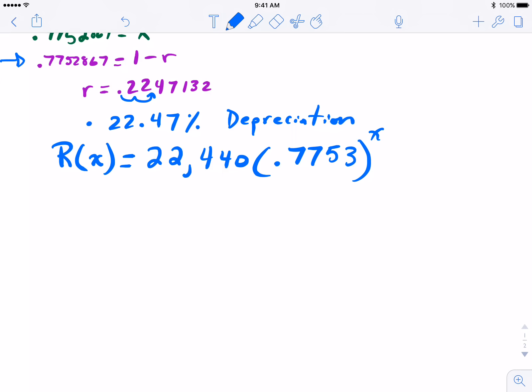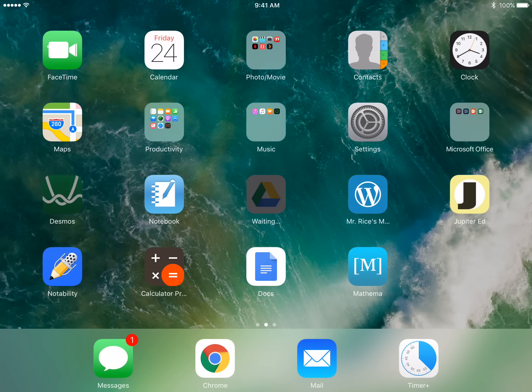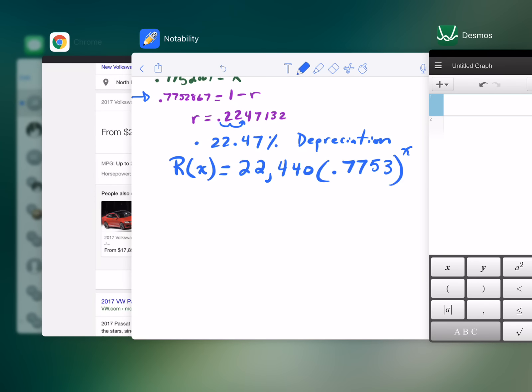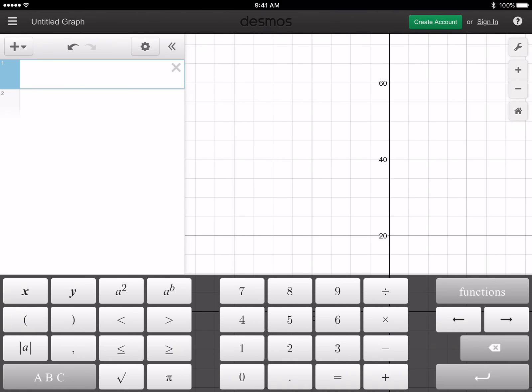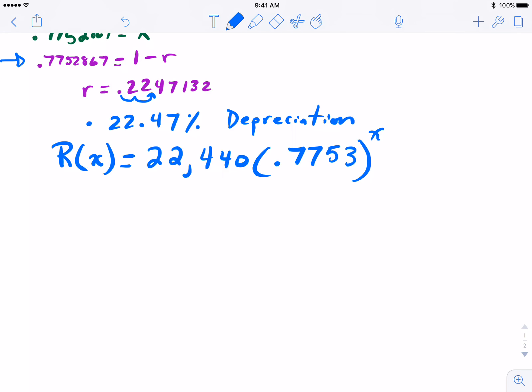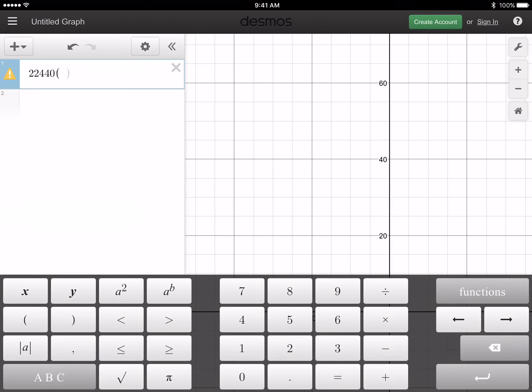Now using software such as Desmos we can type this in. We have 22,440 times 0.7753 to the x power. We don't want to forget about the beginning.